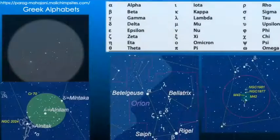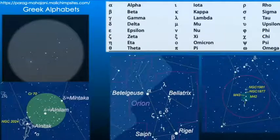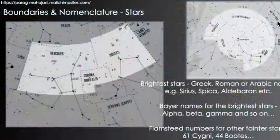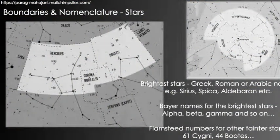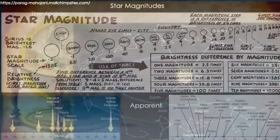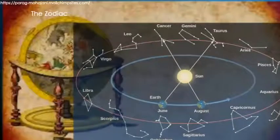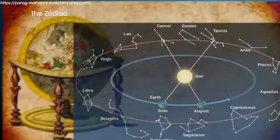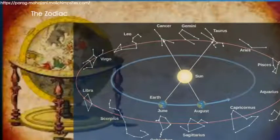We will also learn the field version of the charts, the magnitude scale, the Bayer catalog of stars, the constellations, the Messier catalog, the deep sky objects and the zodiac. Finally, we will understand the concept of epoch and precession.